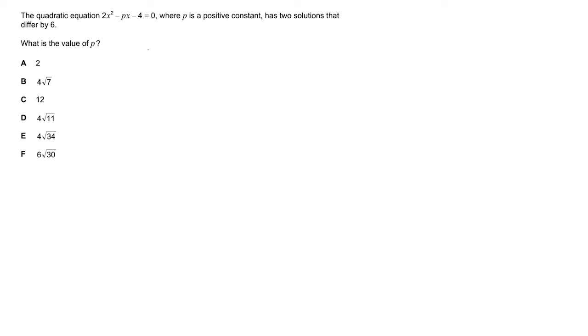Well, in order to find what the value of p is, you want to use the quadratic formula, which is -p plus or minus √[(-p)² - 4(2)(-4)] all over 2(2). So that's going to give us p ± √(p²...